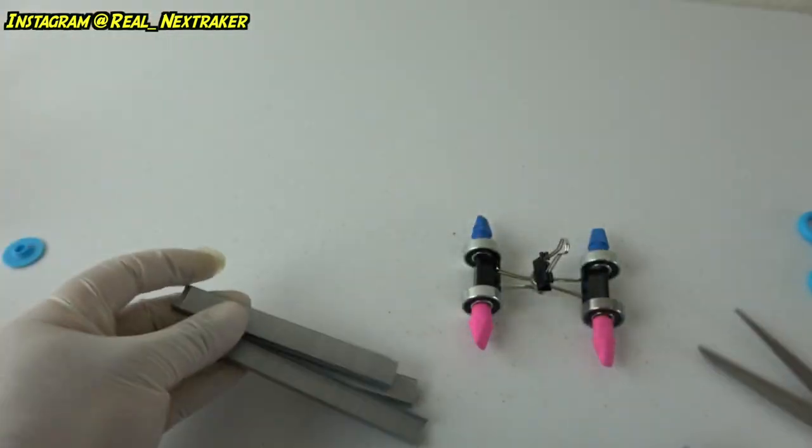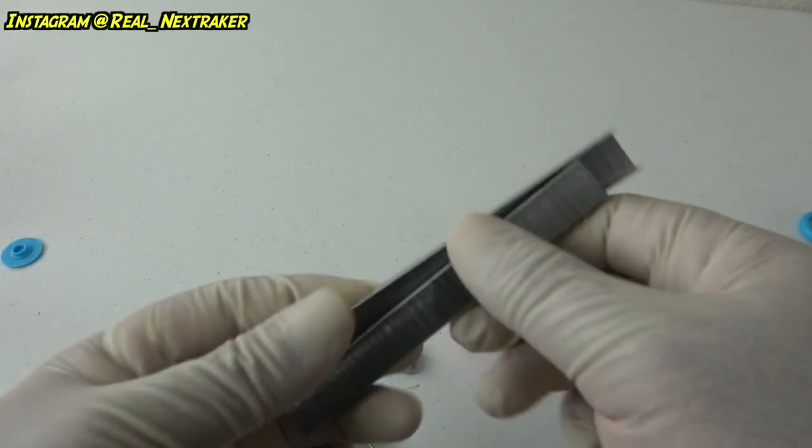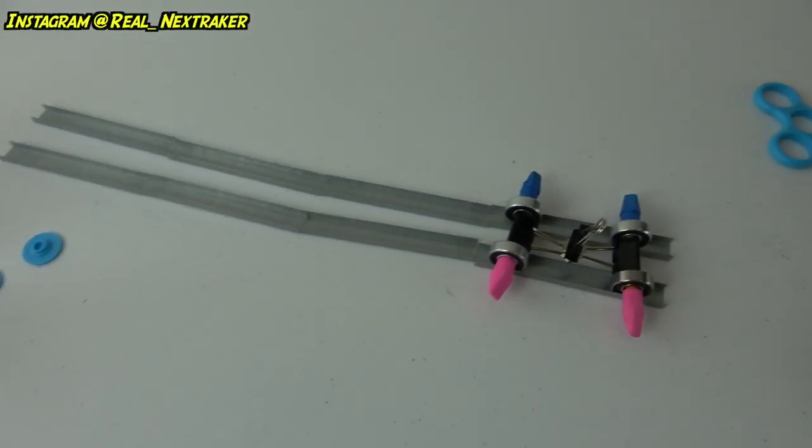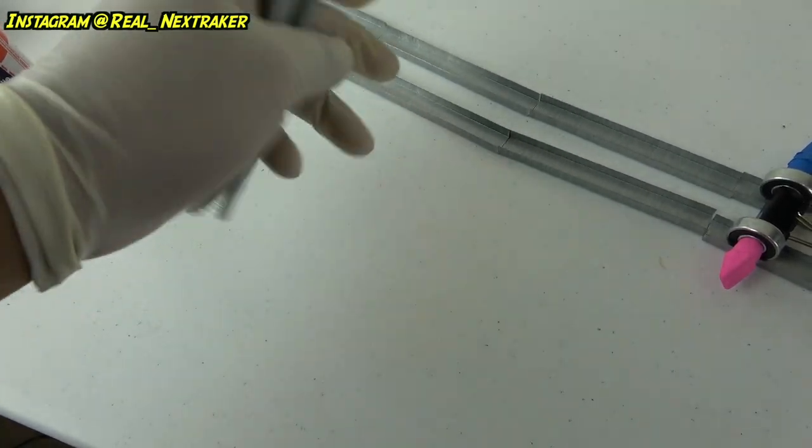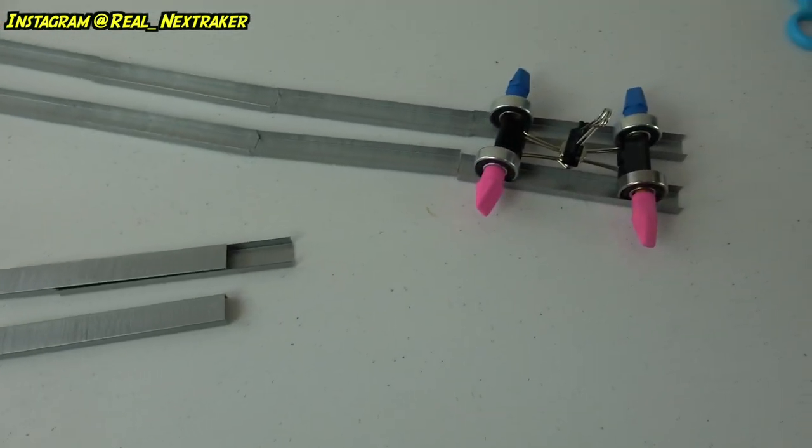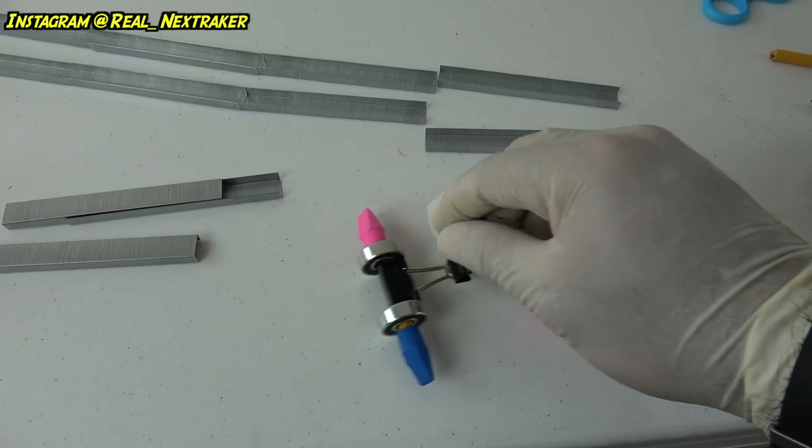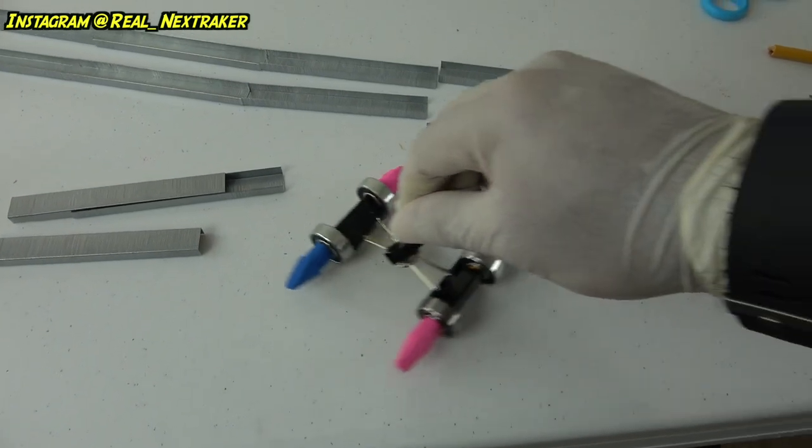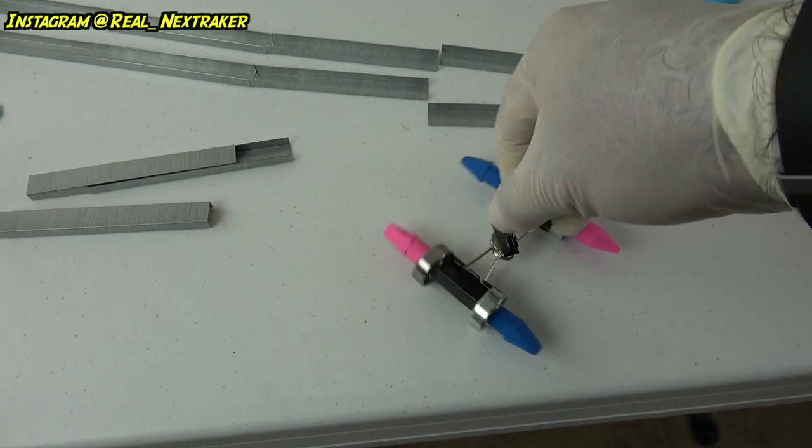Last thing we are gonna do for our little car is make some tracks for it. For that, you can use a stack of staples if you have them available. Just line up two parallel rows of them and you just made a fun car you can play with in the classroom on top of your desk. Hopefully, you don't get caught. Would be a bummer to get your car confiscated right after you have finished building it.